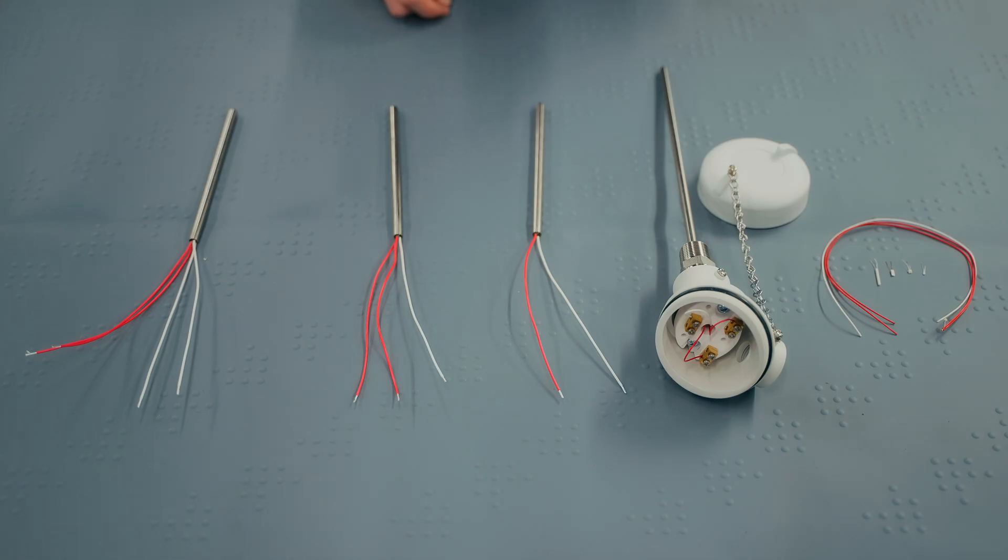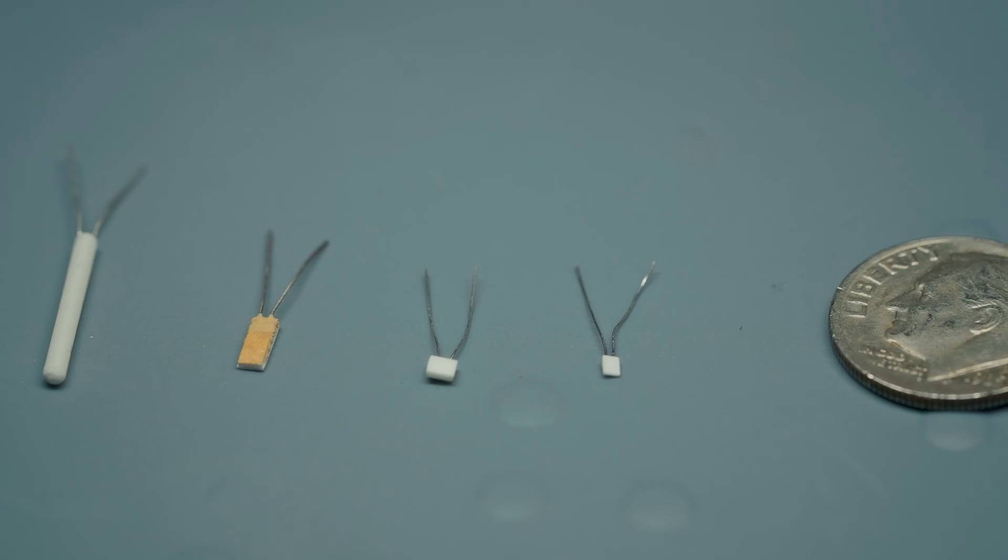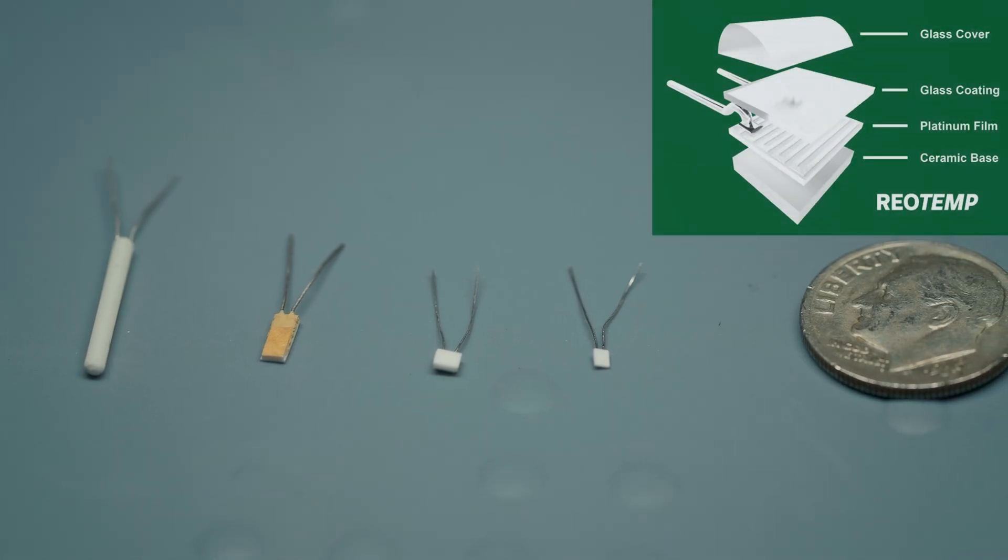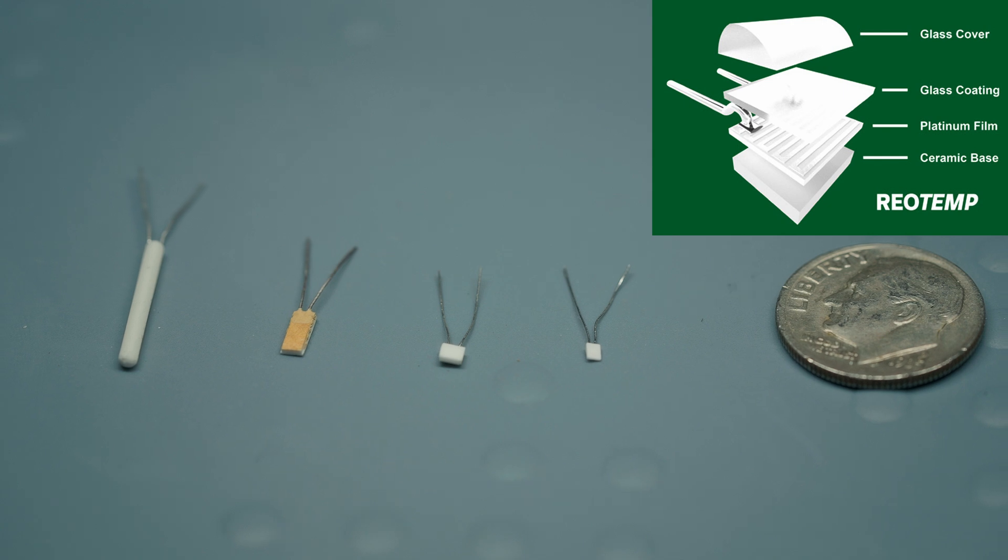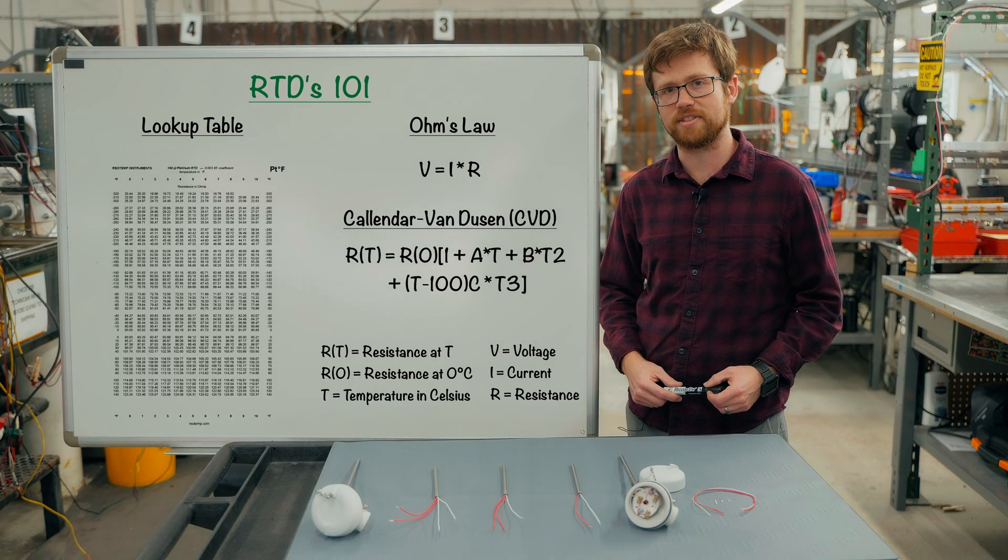RTDs come in many different shapes and sizes but are most commonly constructed as thin film elements. A thin layer of platinum is etched onto a ceramic base and covered in protective glass. As the platinum heats up, its resistance increases.